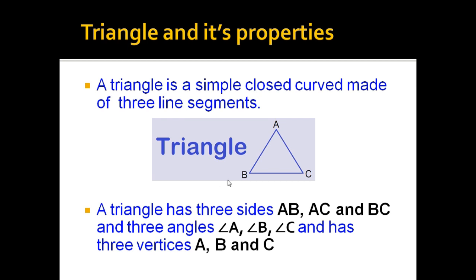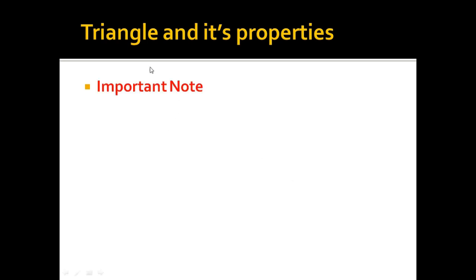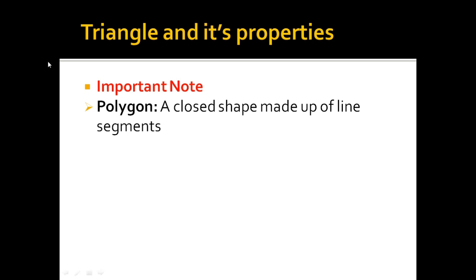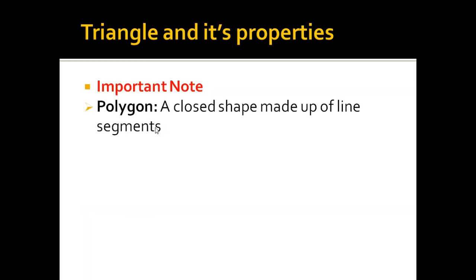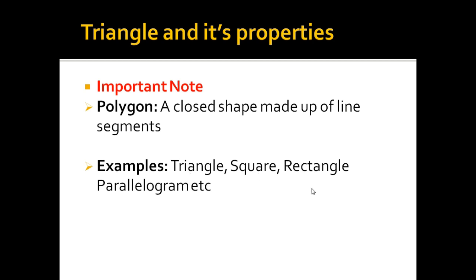Here is an important note to write down for revision. The word polygon means a closed shape made up of line segments. A triangle is a closed shape made up of line segments, so a triangle is also a polygon.